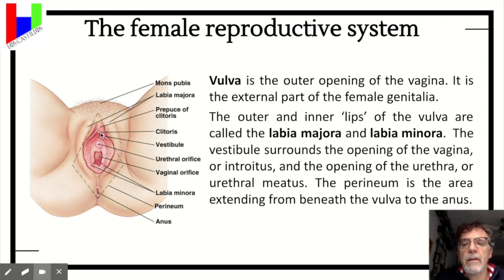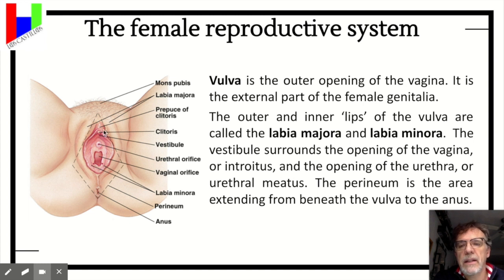Here, between the upper part of the labia minora, we have the clitoris. And this is the prepuce of the clitoris.